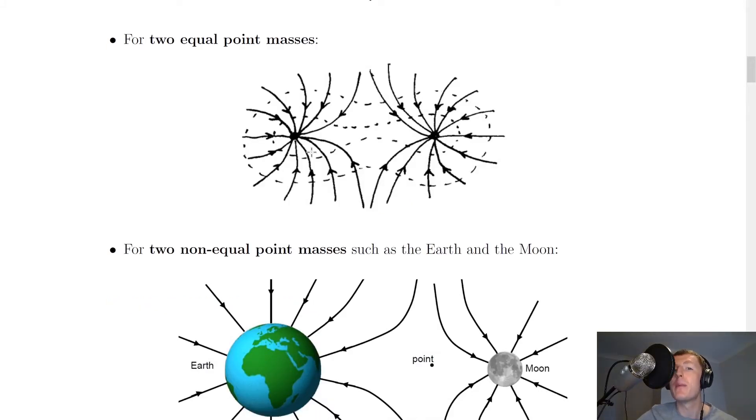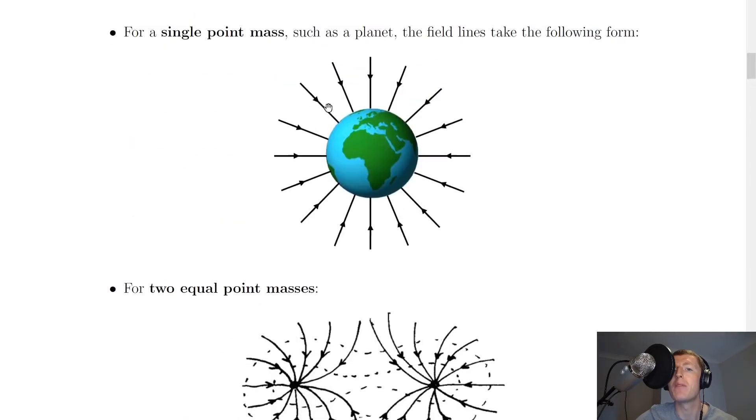If we had two equal point masses, let's say two planets that had the same mass, then the field lines would be going in this way. In this case, we've got the field lines at these points curving away from each other to create this gap or region in the middle where there are no field lines. Away from the middle region, the field lines follow the same kind of circular radial field as we saw above.